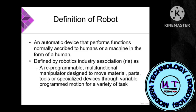The definition of a robot: an automatic device that performs functions normally ascribed to human beings. A machine in the form of a human — it also performs all tasks automatically with some processing and thinking.